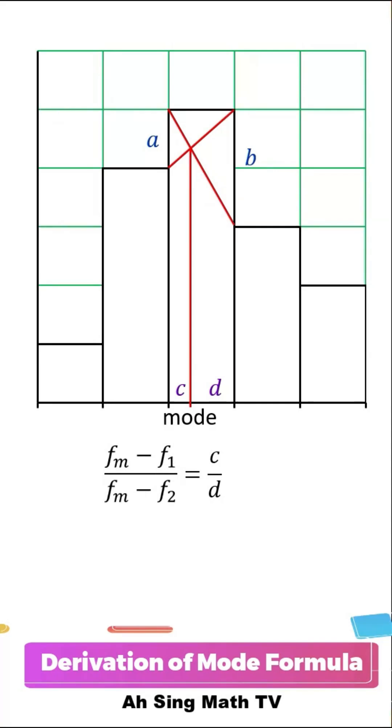On the other hand, C is the size between the lower class boundary and mode, while D is the class size after removing C, which means that it is the class size minus mode minus lower boundary.